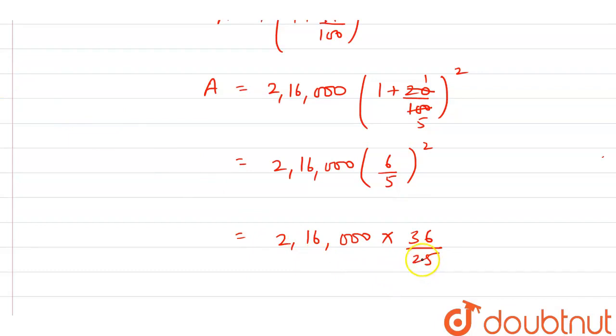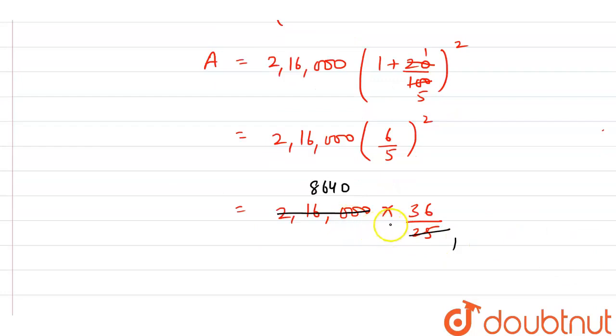2,16,000 simplifies to 8,640, and multiplying 8,640 by 36 gives us 3,11,040.